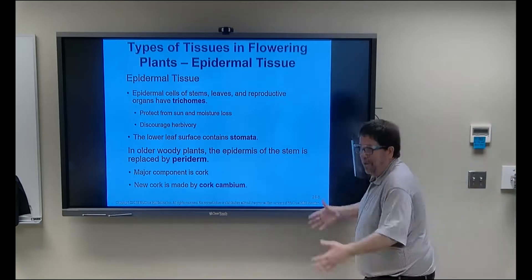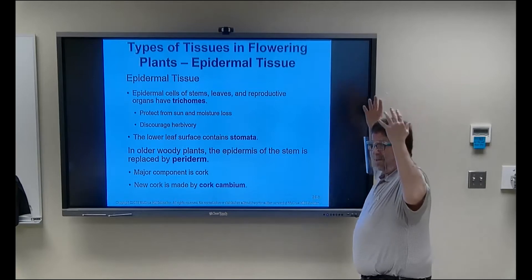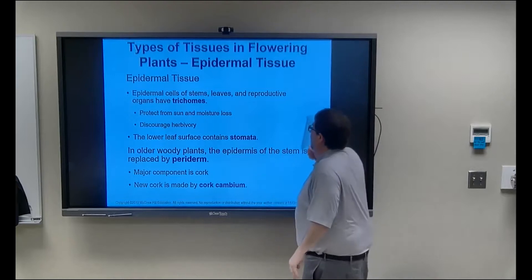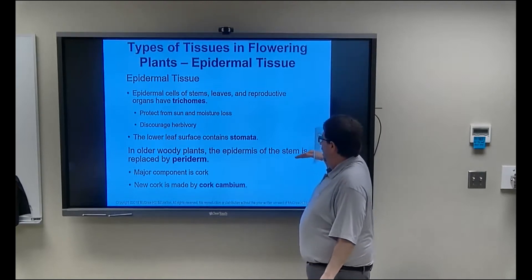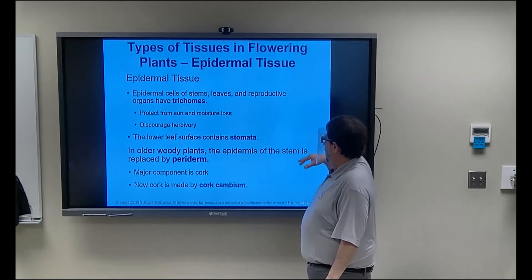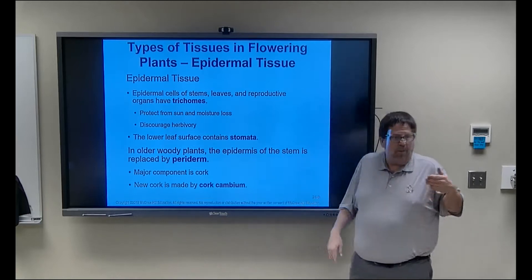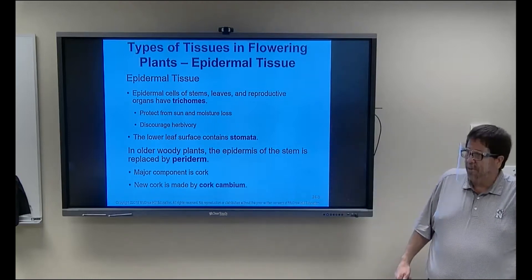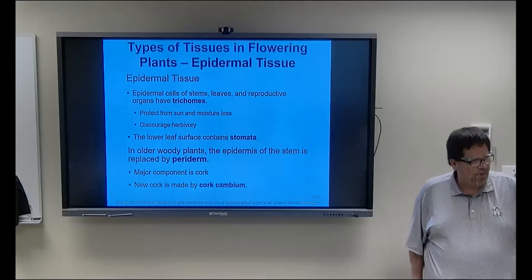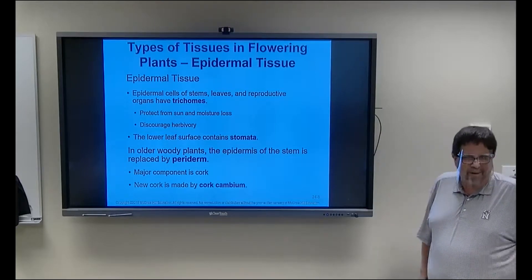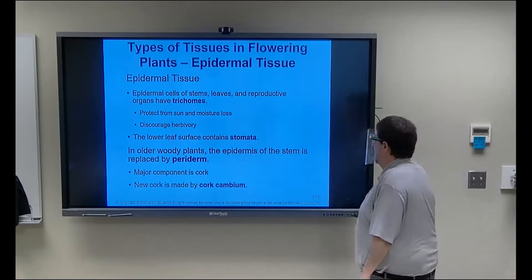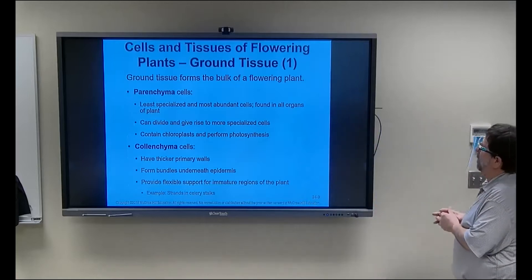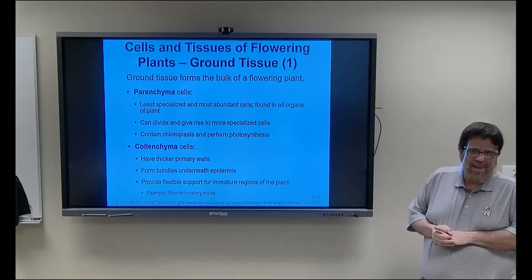The evaporation of water at the stomata is very important — that's how they pump water up. It pools water all the way from the root to a 300-foot-tall redwood tree. They don't have a heart pump; they use the power of water evaporating at the stomata. Older woody plants have a periderm on the outside, and cork cambium makes the bark. The bark will fall off every year in most woody plants.